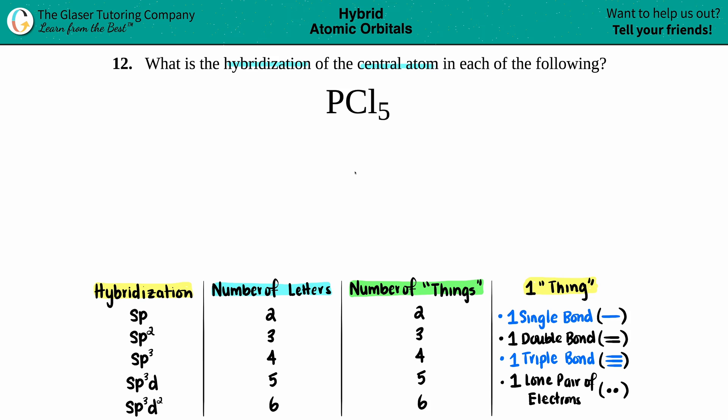When you're drawing your Lewis structure, the least electronegative is in the middle. So phosphorus is way less electronegative than chlorine, so phosphorus in the middle surrounded by the chlorines. Maybe I'll have one, two, three, four, and five.